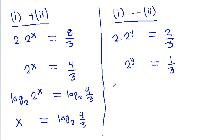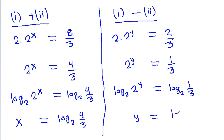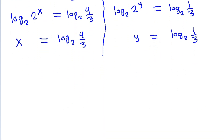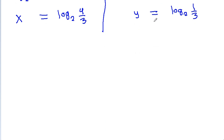If we take log base 2 of 2 power x is equal to log base 2 of 4 by 3, and log base 2 of 2 power x will be equal to x, that is equal to log base 2 of 4 by 3. And here we can get 2 power y is equal to 1 by 3, and if we take log base 2 both sides, then y is equal to log base 2 of 1 by 3.